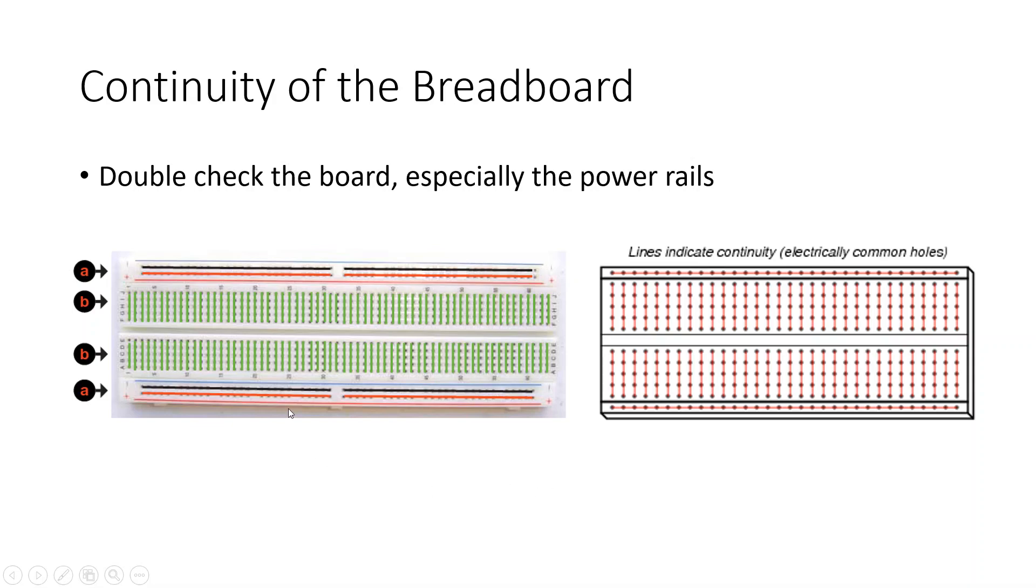So, make sure you check the continuity of the breadboard. Most of the time in the lab, we're only dealing with one type of voltage to reference the ground. So, we can just simply jump wires across to each of these rails.